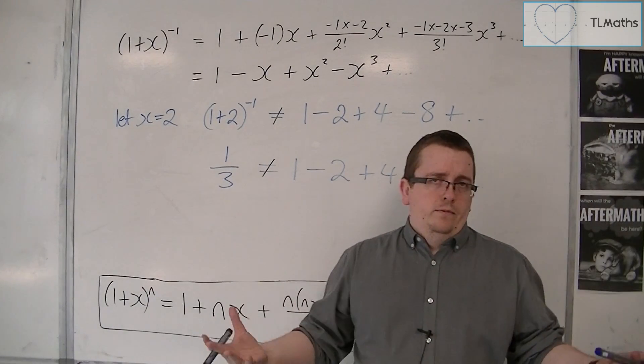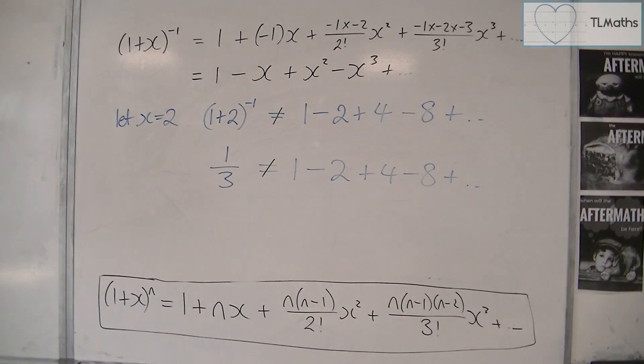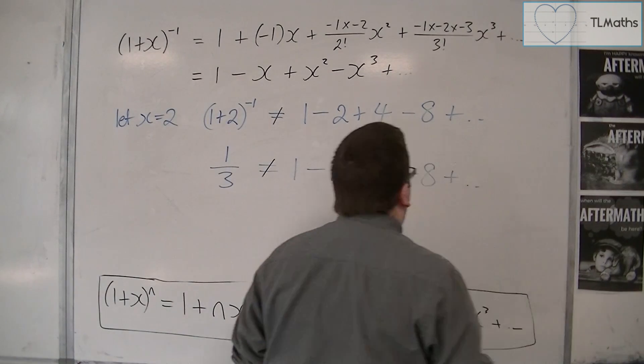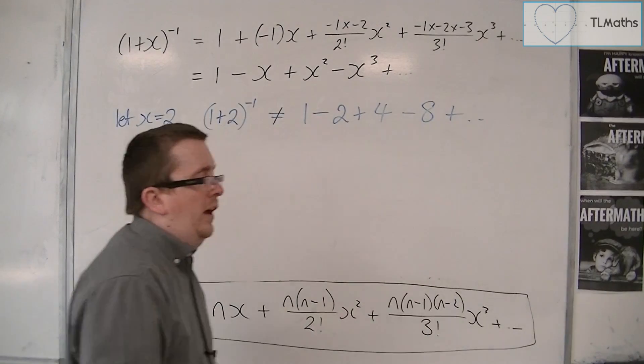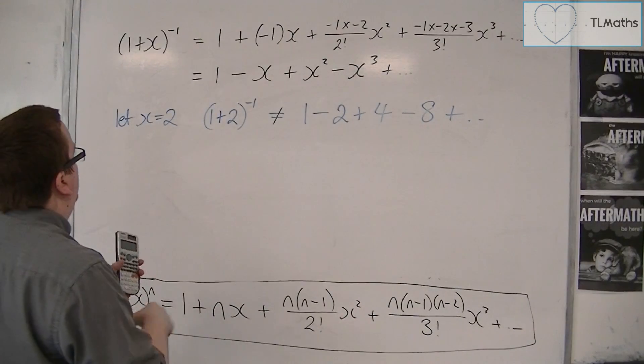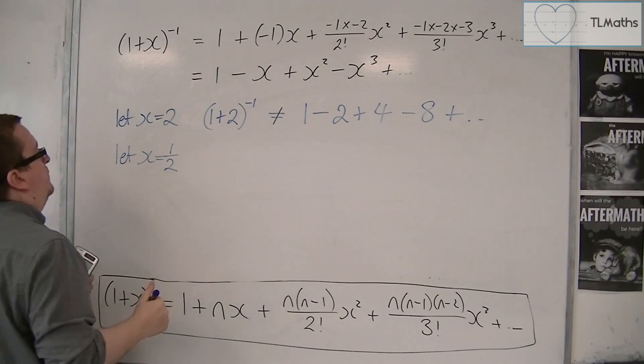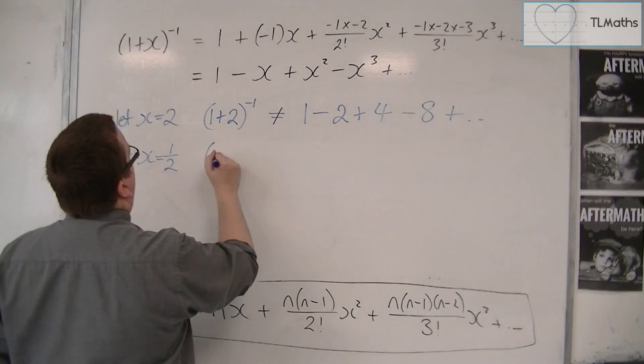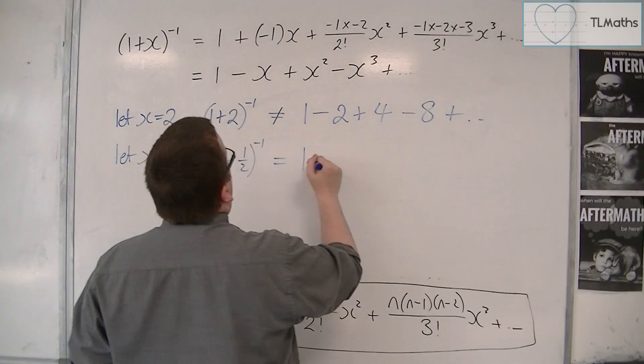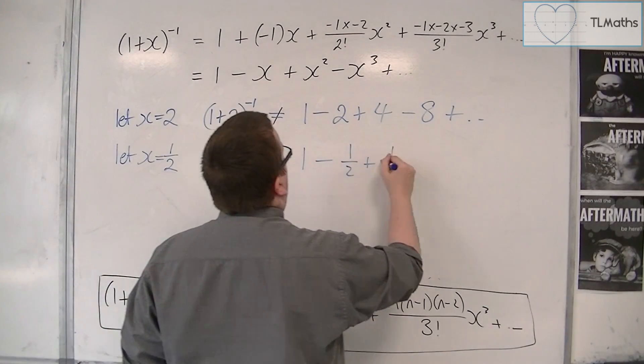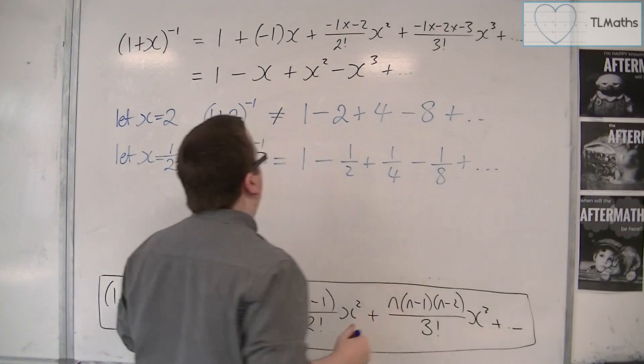So you might be thinking, well, does it work for any? Let's check, shall we? Let's say we look at x equals half. So we would have 1 plus 1 half to the minus 1, and then we'd have 1 minus 1 half plus 1 half squared, so 1 quarter, minus 1 half cubed, so 1 eighth, plus, and so on.